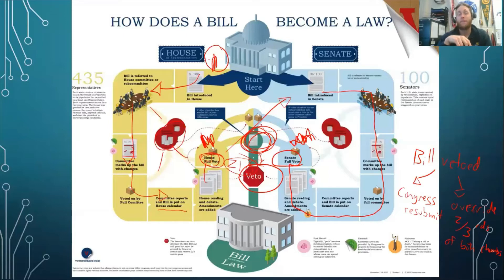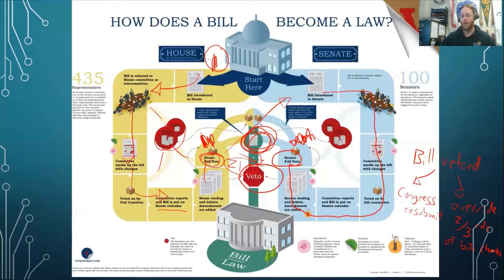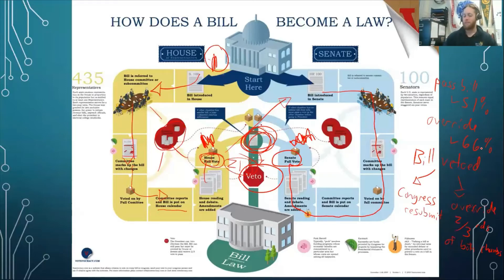Overriding a veto doesn't happen very often, mainly because there's a reason the President vetoed it, and Congress doesn't want to always upset the President by going over his or her head. So typically they'll either let it die or revise it and send it back. But it has happened in the past. For a bill to be passed, we needed 51%. For an override, we need 66% or two-thirds. So for a bill just to make it to the President's desk, it's doable. To override it, it's a little trickier — the bill may not have enough support in Congress to get that two-thirds majority.